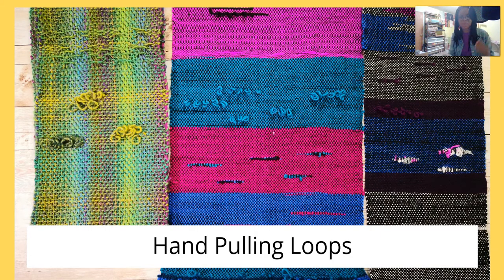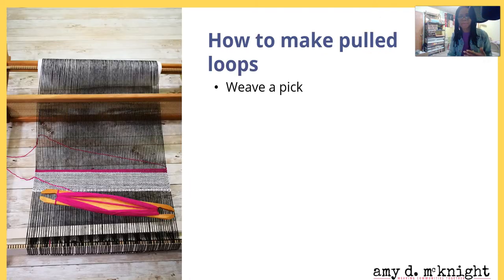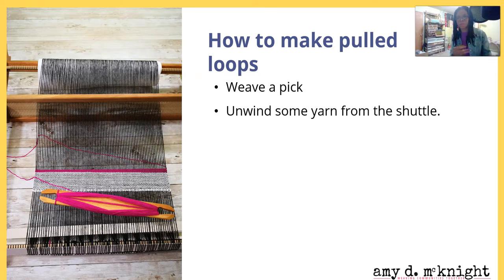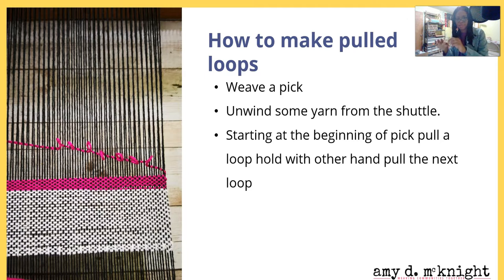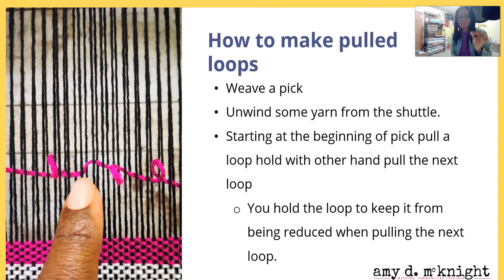Next up we have hand-pulled loops. These are super easy to do on the fly and can be done randomly or in a more patterned way. Here's how: weave a pick, then unwind some extra yarn from the shuttle — more yarn than you would need to send the shuttle back in the opposite direction. Starting at the beginning of the pick, pull a loop, hold it with the other hand, then pull another loop. Pull and hold, pull and hold, all the way across.